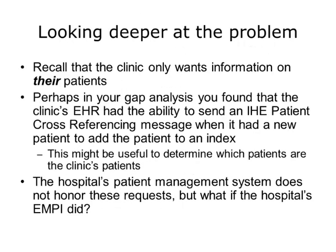Another identified gap: the hospital sends messages about every patient admitted, but the Good Health Clinic EHR only wants information about their own patients. This is not a simple filter. Perhaps the clinic's EHR had the ability to send an IHE patient cross-referencing message to add patients to an index. The hospital EMPI could serve this purpose — all of Good Health Clinic EHR's patients and all hospital patients could be added to the EMPI and cross-referenced. When a Good Health Clinic patient is admitted, the EMPI is queried, confirms the patient belongs to the clinic, and the admit message is forwarded to the Good Health Clinic EHR.